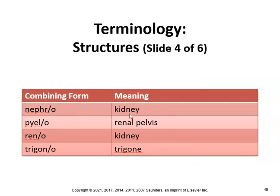Nephro gives us nephroptosis, meaning prolapse of the kidney, and nephropexy, fixation of the kidney. Nephrolithotomy is incision to remove a kidney stone, and nephrosclerosis is hardening of the kidney. Pyelo refers to the renal pelvis, so pyelolithotomy would be incision of the renal pelvis to remove a stone.